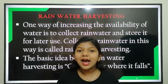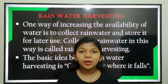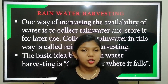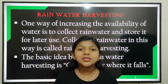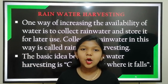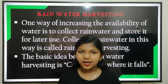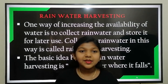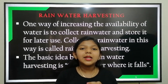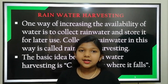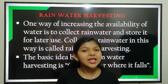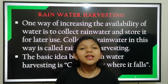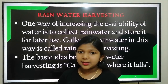Let's see rainwater harvesting. Rainwater normally runs into drains, rivers, ponds, streams, lakes, oceans, etc. Some of it seeps through the soil and forms underground water. Only a small portion of water retains on land. One way of increasing the availability of water is to collect rainwater and store it for later use. Collecting rainwater in this method is known as rainwater harvesting.